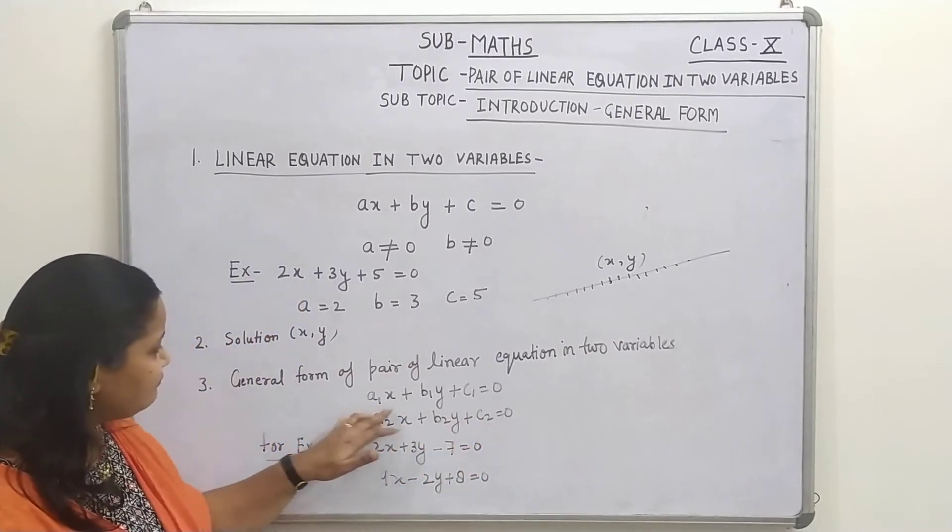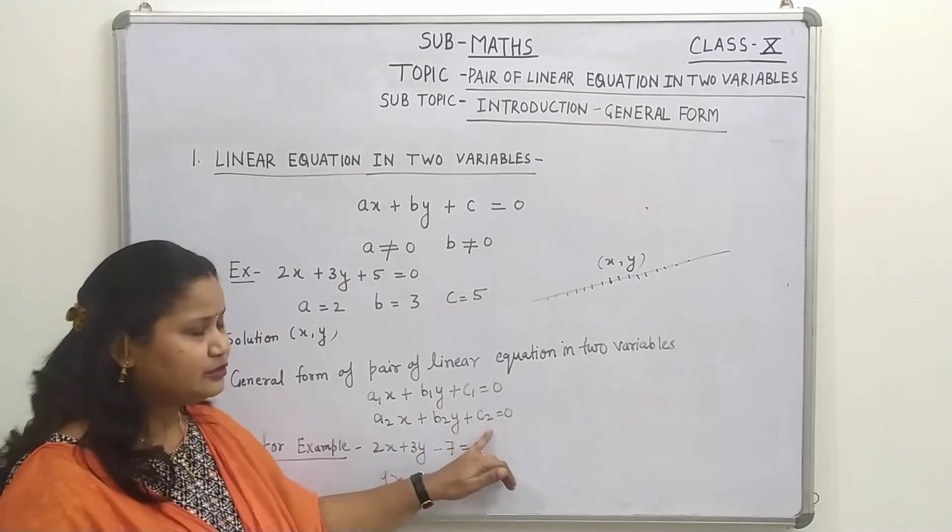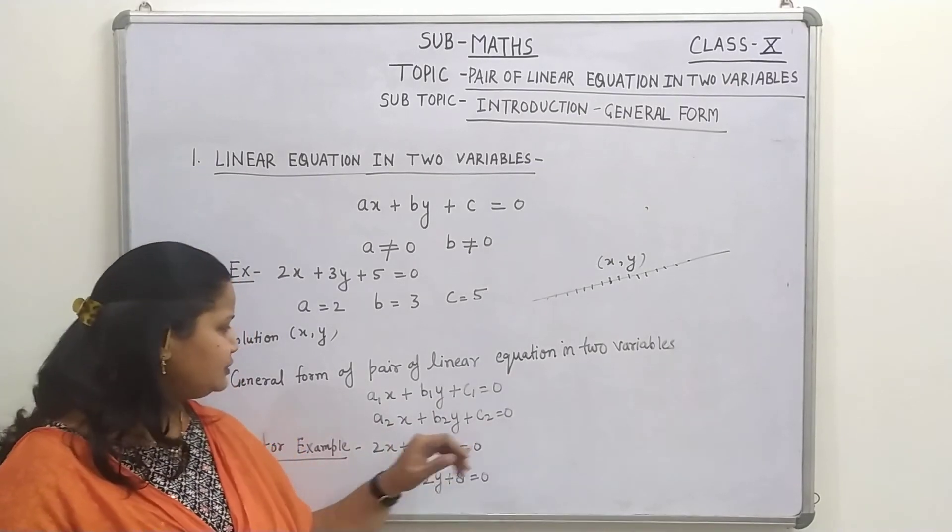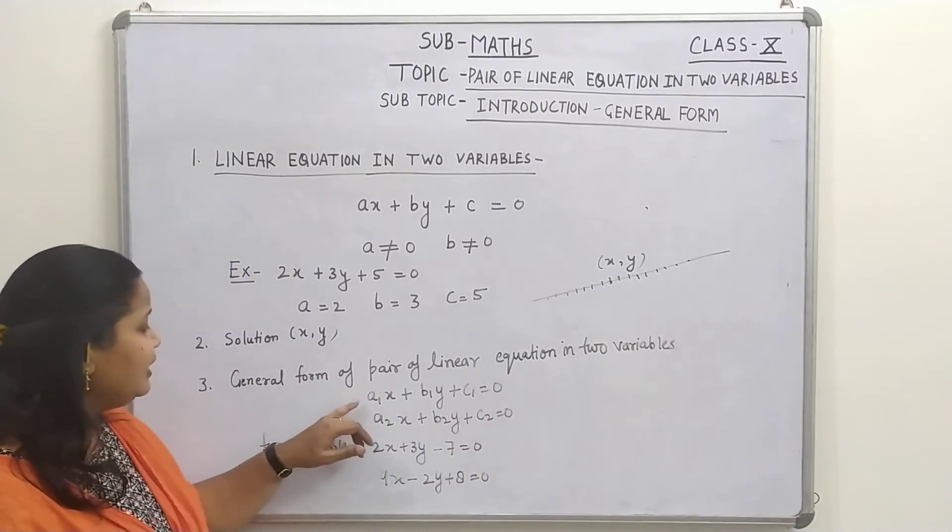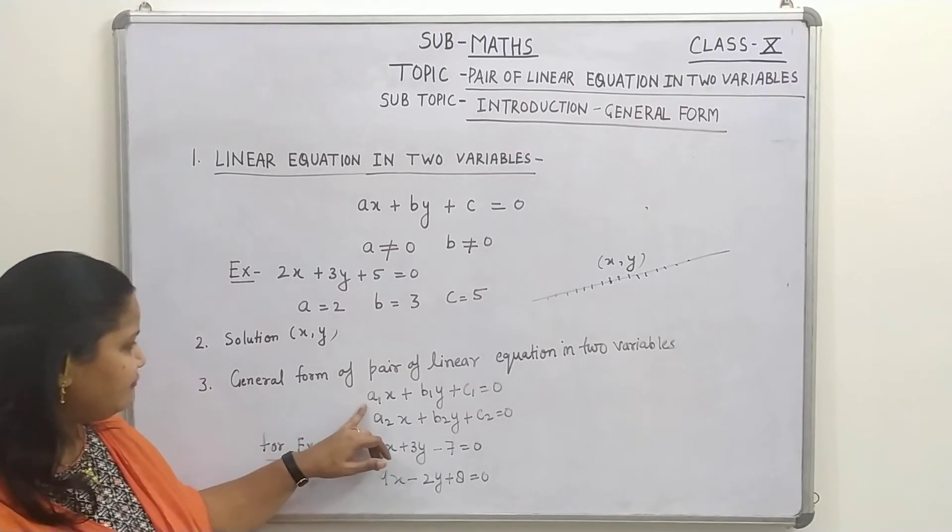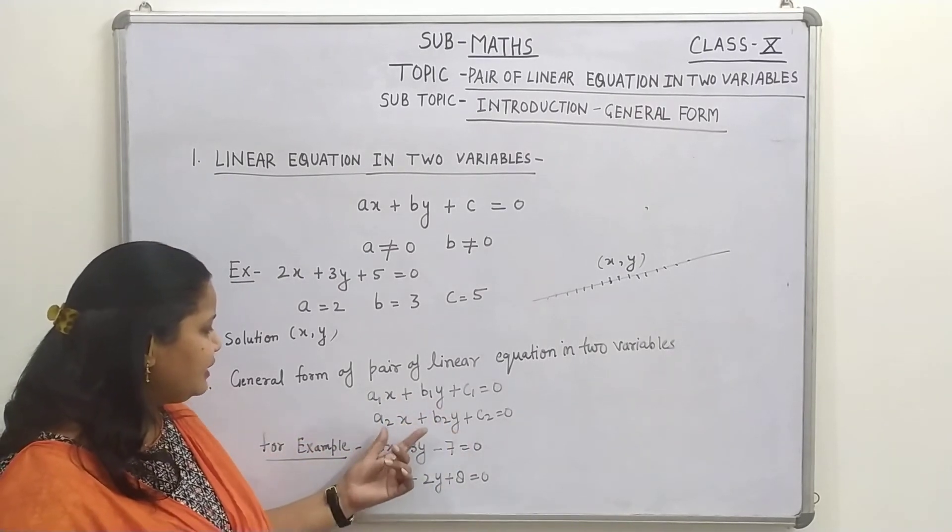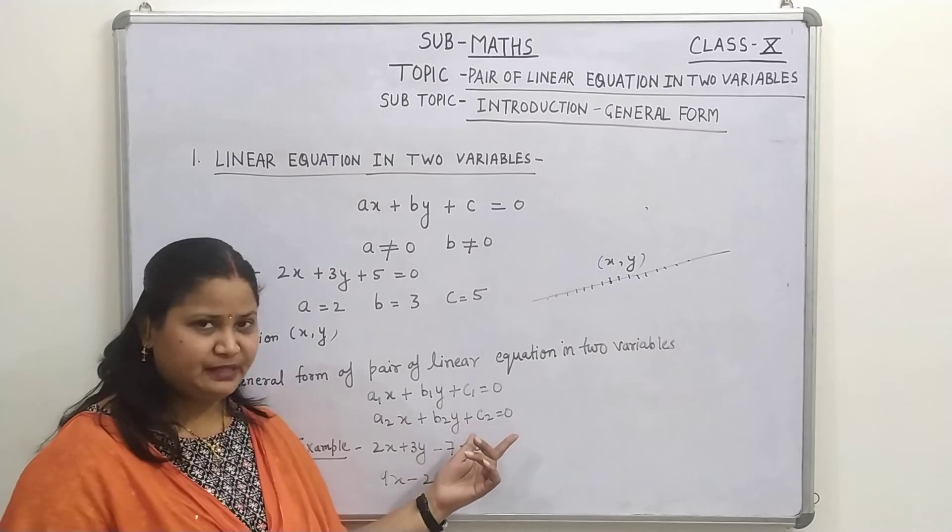Here, these A1, B1 and C1 and A2, B2, C2 must not be equal to 0. And this A1, B1, C1 and A2, B2, C2 must be real numbers.